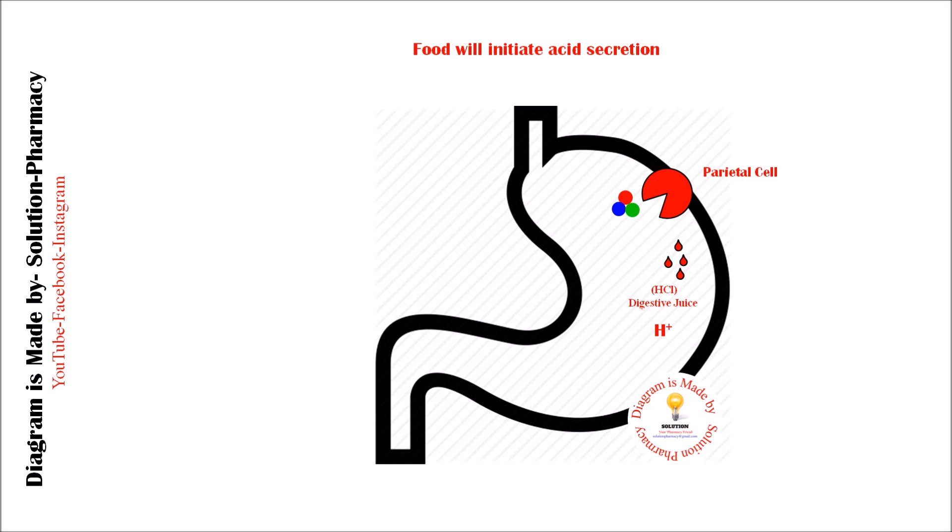When a condition arises where acid secretion increases in the stomach — due to some known or unknown reason such as stress, certain medicines, specific foods, or other factors — these can influence the regulation of stomach acid secretion, causing hyperacidity and related conditions.